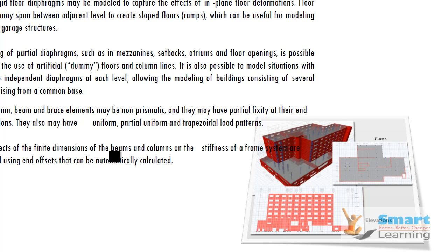You can have a dummy floor or column lines which directly gives you the capability for configuring your loads. Column and beam brace elements may also be prismatic with whatever default cross-section you need to apply, and they may have partial fixity at their ends. Whatever boundary condition you need — for example, a roller joint at the ground — that can also be configured.